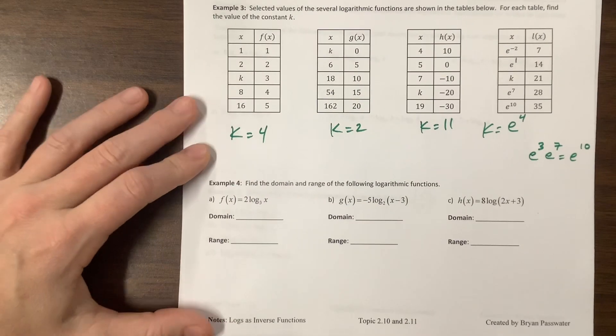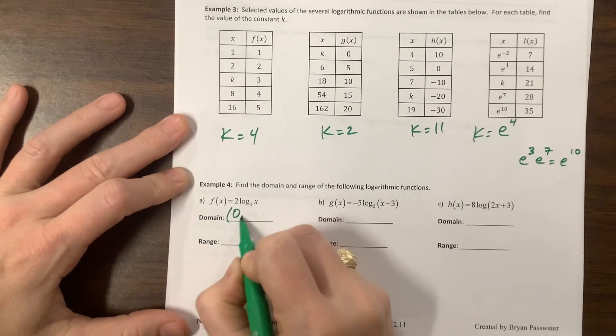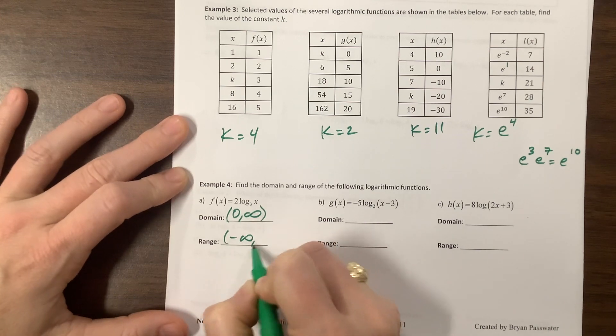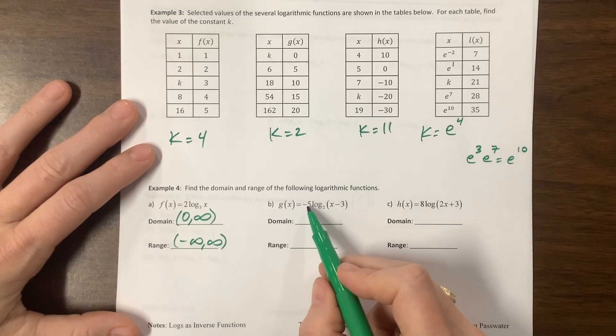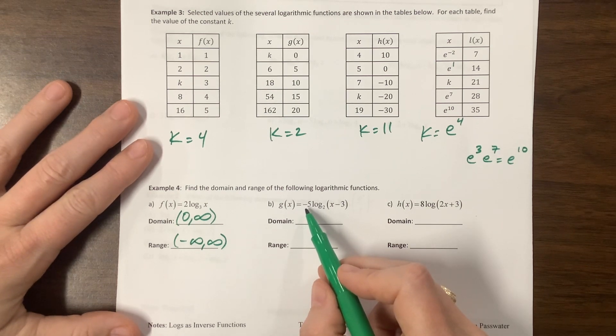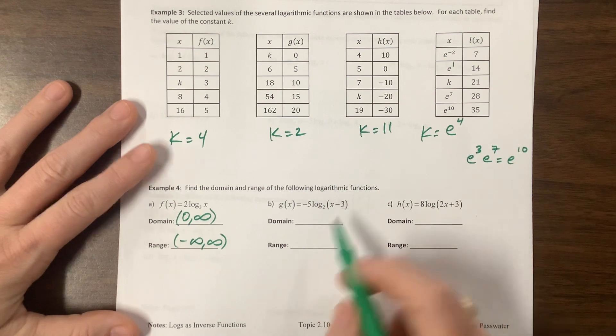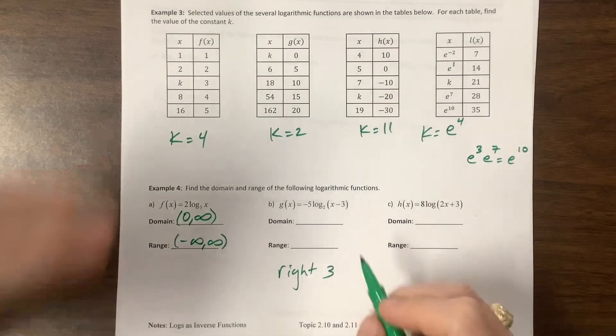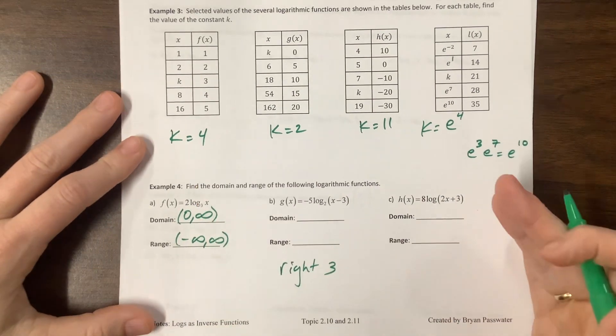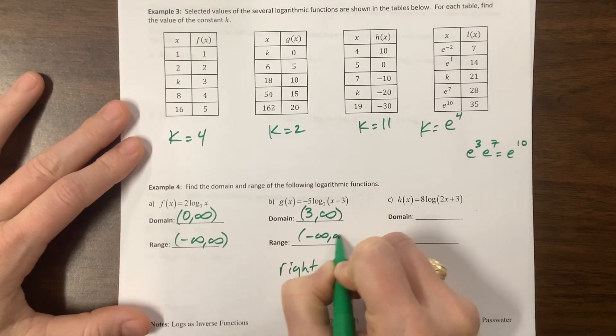So this one, the domain of this guy, all we've done is had a vertical stretch. And so that doesn't change the domain and it doesn't change the range. This one is going to reflect, but that doesn't change the domain of the range. It's going to stretch. That doesn't change the domain of the range. But it is going to shift it to the right. So the thing that we care about here is that this is going to go right three. And so my domain used to go from zero to infinity. Now we're going to go from three to infinity and my range is unaffected.